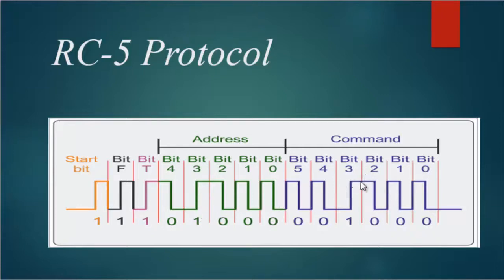These six command bits vary for each button of the TV remote. So from this variation, we can tell which button is pressed.